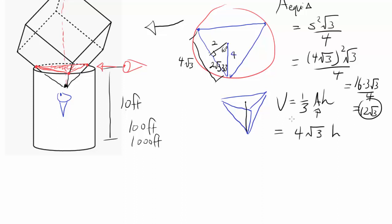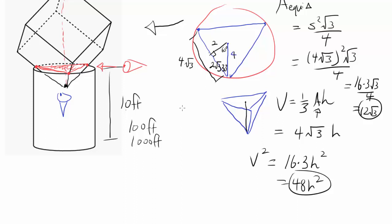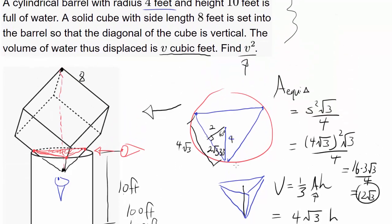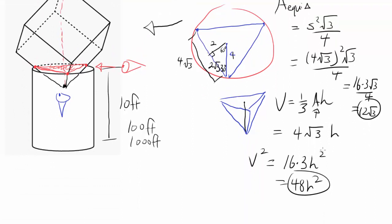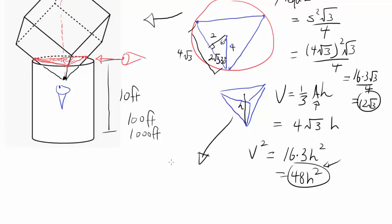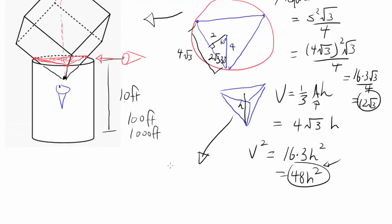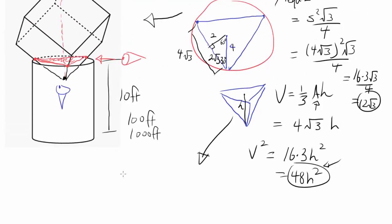Plugging that in, we have volume equals 4√3 times h, where h is the pyramid height we need to find. Since we want V squared, we get V² = 16 × 3 × h² = 48h². Once we find h, we just square it, multiply by 48, and we're done. Let me redraw this diagram since it's getting small.